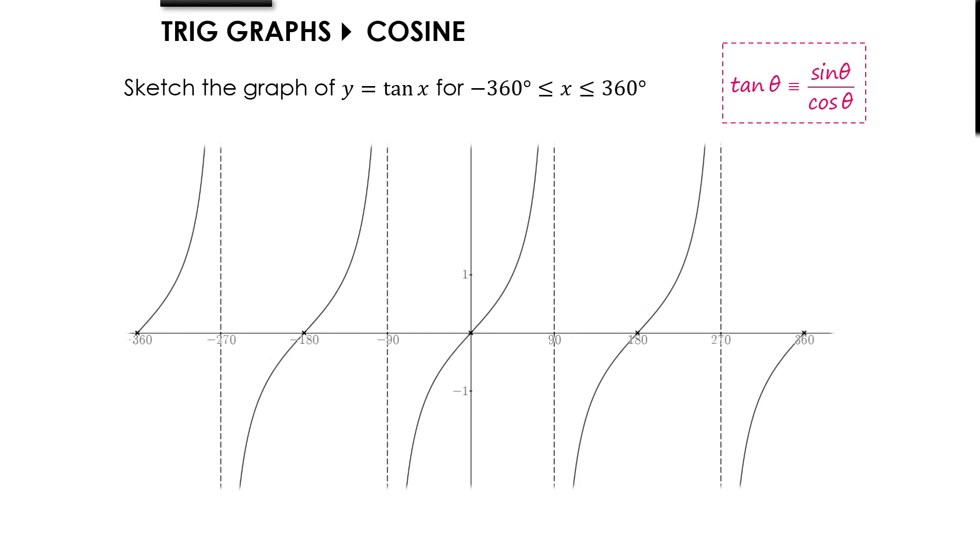Some key things to look out for when sketching this yourself: Before you start, mark the x-axis every 90 degrees and put asymptotes at plus or minus 90 and 270. As your curve approaches those asymptotes, be really careful to make sure your curve never actually touches them. If you're drawing a graph in the exam with asymptotes and your curve touches your asymptotes, it's likely to be marked incorrect.